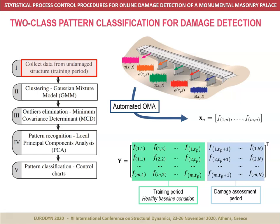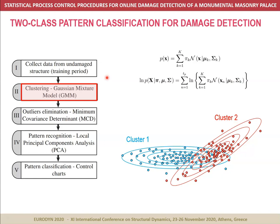The approach comprises the collection of ambient vibration records in a structure and the extraction of its modal features through automated operational modal analysis. The identified resonant frequencies are arranged in an observation matrix Y by columns. A dataset is defined as the training period to define the healthy condition of the structure, typically a one-year period. Then, in order to characterize the different environmental regimes in the structure, the resonant frequencies in the observation matrix Y are clustered together into different datasets using a Gaussian mixture model. This approach assumes that the probability density function p(x) of a dataset in the training period can be represented as a linear superposition of k Gaussian components or clusters. The model parameters — that is, the mean vector, the covariance matrix, and the distribution of the data points into the different clusters — can be obtained by minimizing the log-likelihood function through an iterative expectation-maximization algorithm.